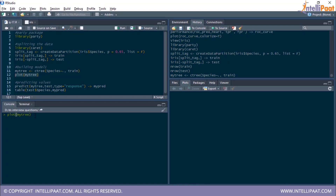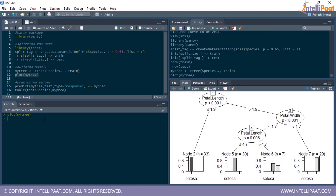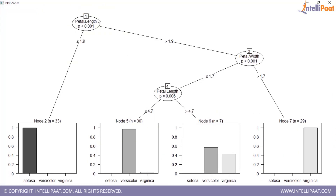Plotting the decision tree: the root node splits on petal length. If petal length ≤ 1.9, the species is setosa. If petal length > 1.9, we have another test: if petal width ≤ 1.7, we have another condition checking if petal length ≤ 4.7. The species tilde dot formula means species is the dependent variable, and all other columns — sepal length, sepal width, petal length, petal width — are independent variables.